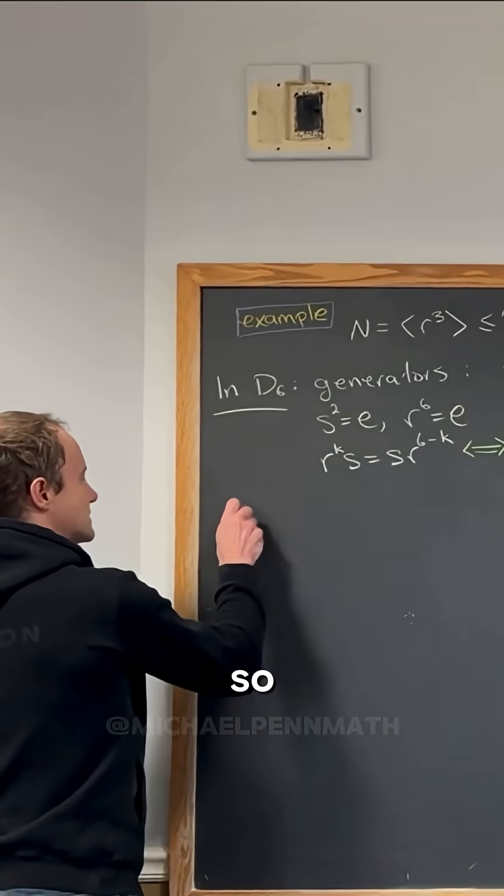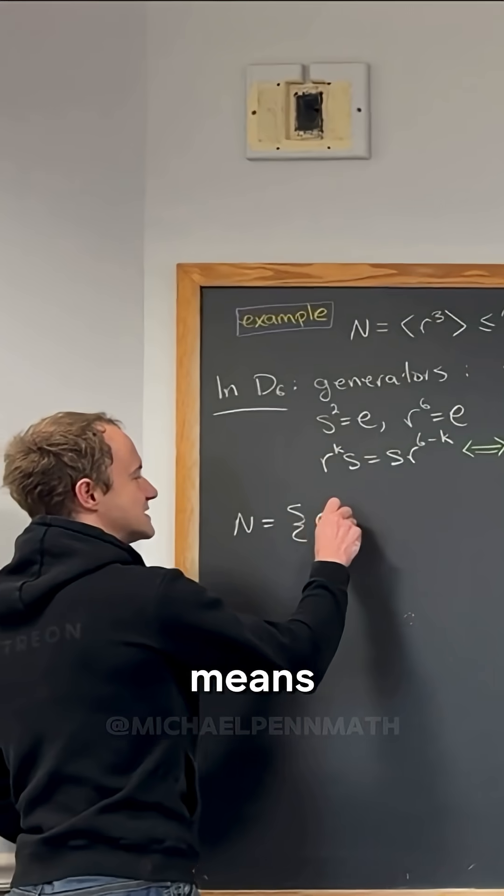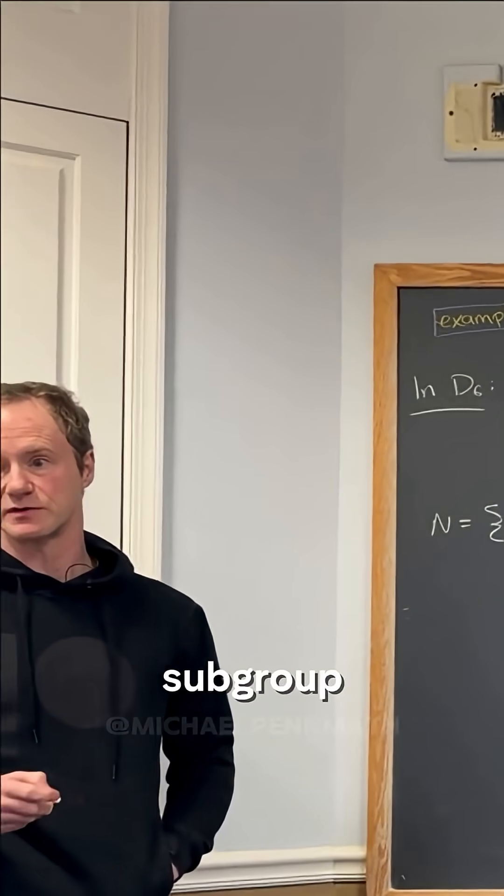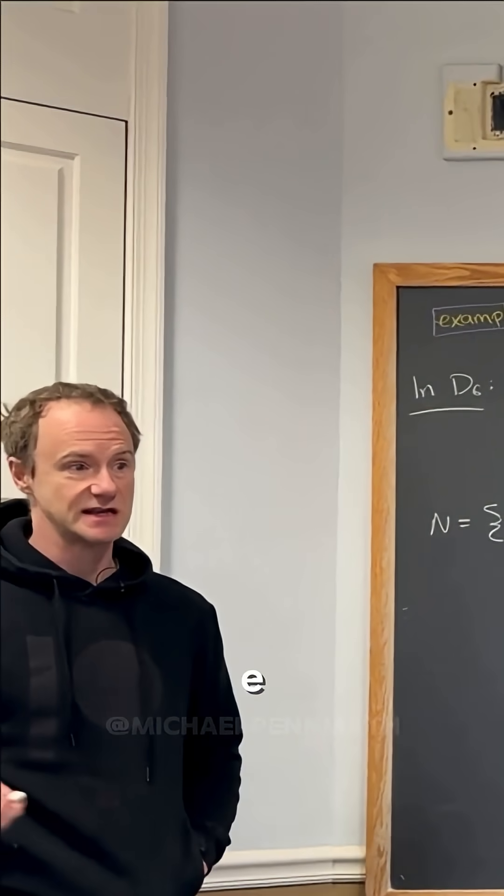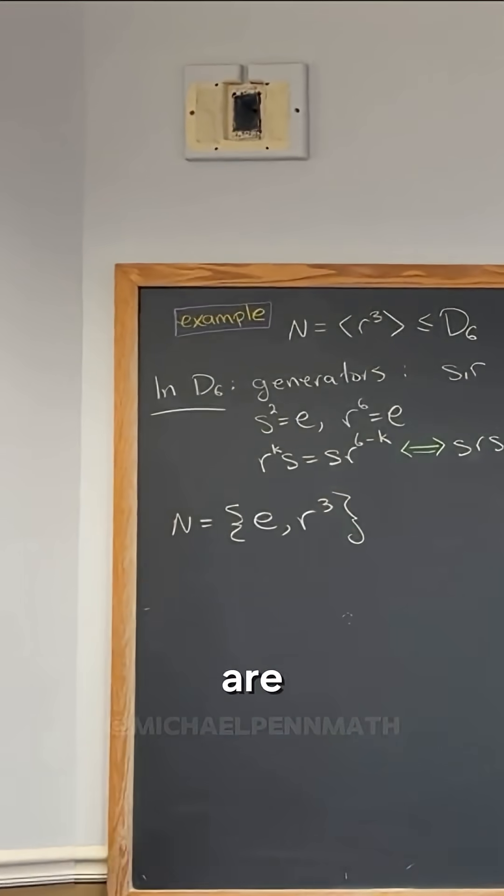So now let's look at N. N is generated by r cubed, so that means it has e, r cubed. And it's a cyclic subgroup, so it's going to have r cubed squared. But what's r cubed squared? Yeah, it's e because it's r to the sixth. Good. So these are the elements of N.